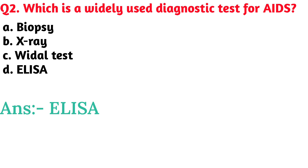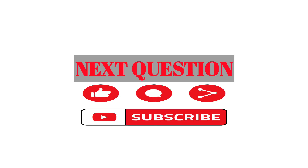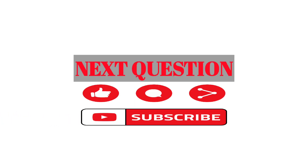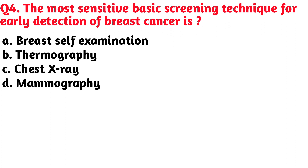Name an important protein-digesting enzyme present in the gastric juice of human beings. Option B, pepsin, is the correct answer. Next question: the most sensitive basic screening technique for early detection of breast cancer is — Option D, mammography, is the correct answer.